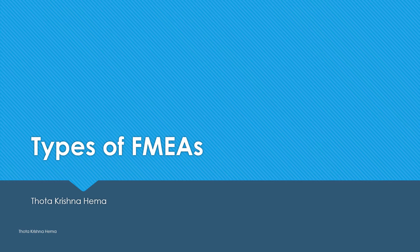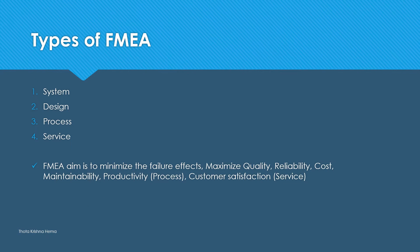For the most common types of FMEA, there are four types: System FMEA, Design FMEA, Process FMEA, and Service FMEA. FMEA aims to minimize the failure effects, maximize quality, increase reliability, and achieve cost optimization or reduction in cost.